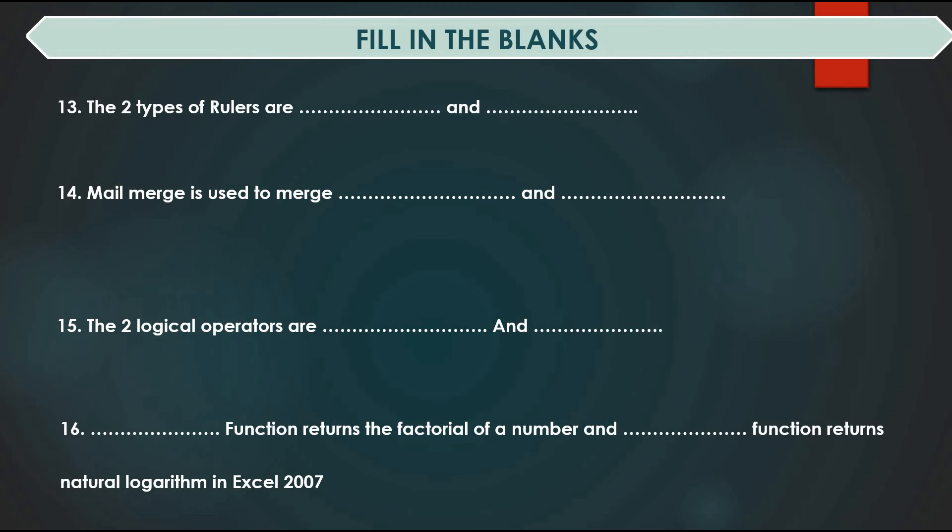The two types of rulers are dash and dash. Mail merge is used to merge dash and dash. The two logical operators are dash and dash. Which function returns the factorial of a number and which function returns the natural logarithm in Excel?